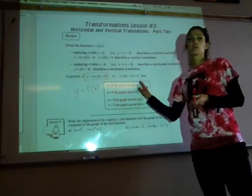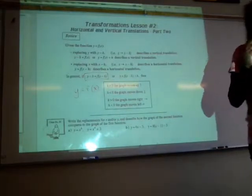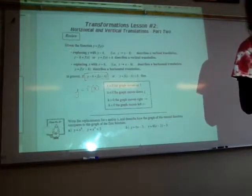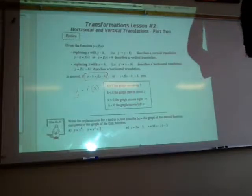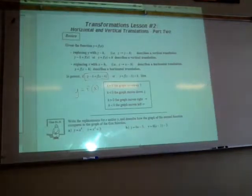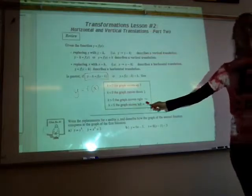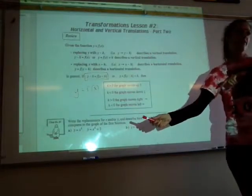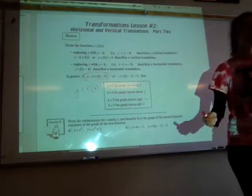Right here summarizes when we move left and right, when we move up and down. If k is positive, we learned that we move up. If k is negative, we learned we move down. If h is positive, we move to the right. And if h is negative, we move to the left.